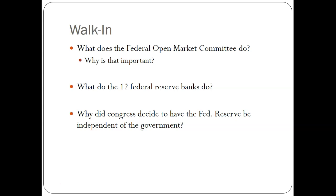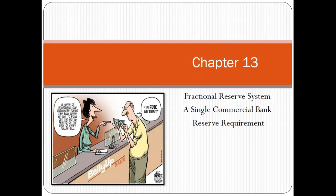Some things to think about — if you aren't sure what the answers are, maybe watch the other video, the old one 12.2. What did the Federal Open Market Committee do? Why is that important? What do the 12 Federal Reserve Banks do? And why did Congress decide to have the Federal Reserve Bank be independent versus a publicly voted-in office? Today we're talking about the fractional reserve system, the creation of a single bank, and reserve requirements.